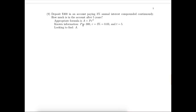The known information is that the present value is $300 — that's the principal, the amount we're going to deposit in the bank. We're earning 3% compounded continuously, the time is going to be five years, and we're looking for the future value, the final amount.